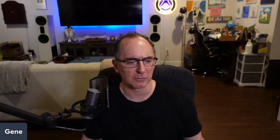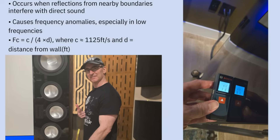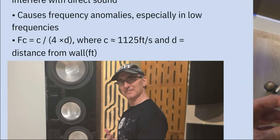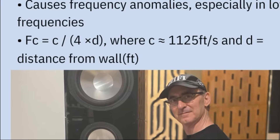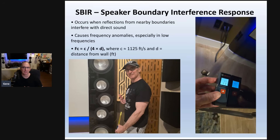I put together a presentation on Speaker Boundary Interference Response. This occurs when the reflections from nearby boundaries interfere with the direct sound, causing frequency anomalies, especially in low frequencies. The general rule formula — call it FSBIR or FC — is FC = C divided by four times D, where C is the speed of sound in air, 1125 feet per second, and D is the distance from the front wall to your speakers in feet.